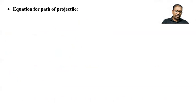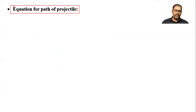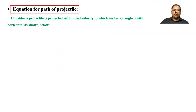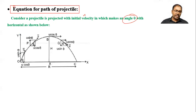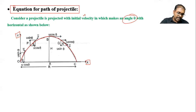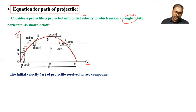Now we have to learn the equation for the path of projectile. Consider a projectile projected with initial velocity u in an upward direction, making an angle theta with the horizontal. In the diagram, this is the x-axis, this is the y-axis, and this is the trajectory. The initial velocity u is resolved into two components: the component along the x-axis is u cos theta.